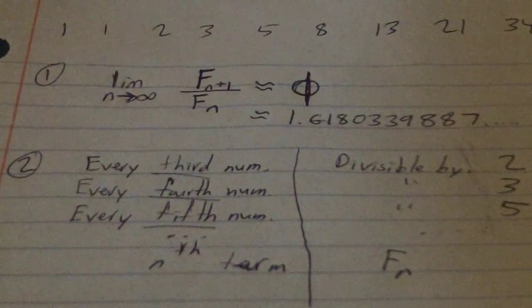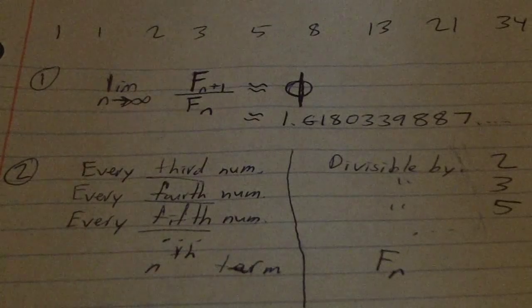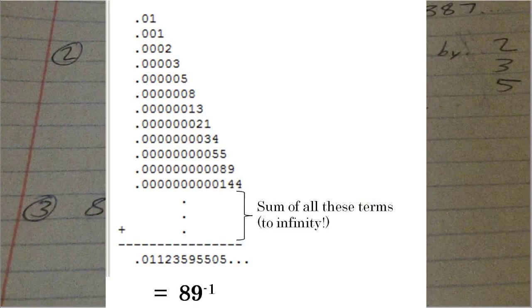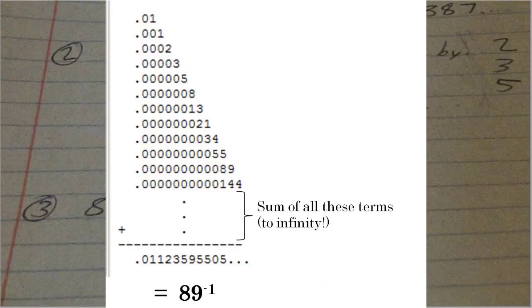The third interesting fact is really just one number by itself, but it's a very interesting number. It is 89 to the minus 1. If we take all of the Fibonacci numbers with a staggering decimal point, as in the above image, and sum them all together, we get the decimal expansion for 89 inverse.